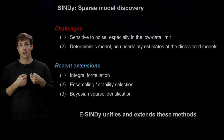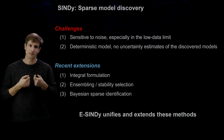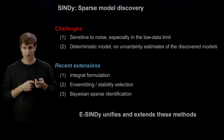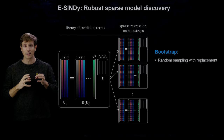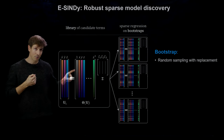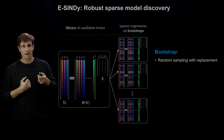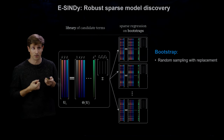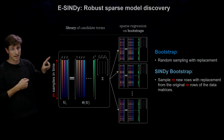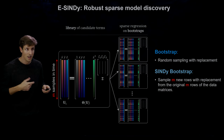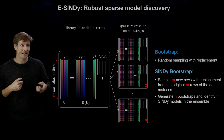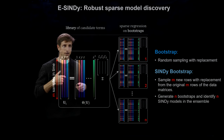We use ensembling to robustify SINDy and exploit the ensemble statistics to identify probabilistic models. Instead of using our data to build a single SINDy model, we take bootstraps of our time derivative matrix and library matrix to build an ensemble of multiple SINDy models. With bootstrapping we mean random sampling with replacement — given m samples in time, we sample m new rows with replacement from the original data and generate n bootstraps, identifying n SINDy models in the ensemble.